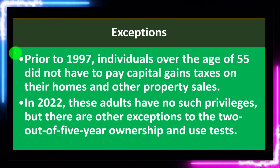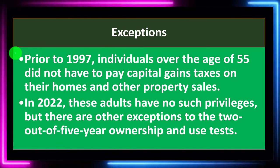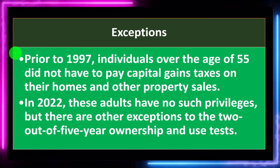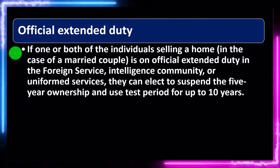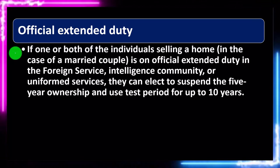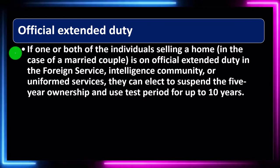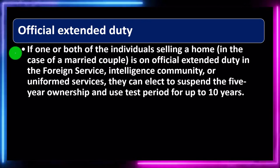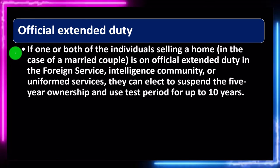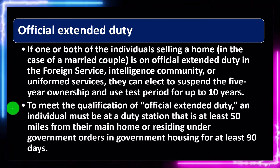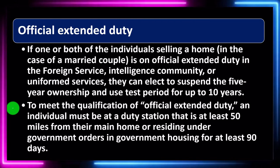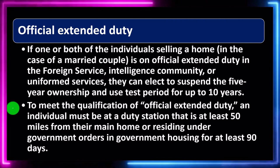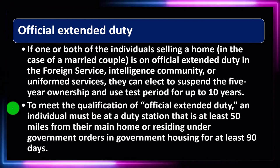Exceptions: prior to 1997, individuals over the age of 55 did not have to pay capital gains tax on their home and other property sales. In 2022, these adults have no such privileges, but there are other exceptions to the two out of five-year ownership and use tests. Official extended duty: if the individual selling a home — or in the case of a married couple — is on official extended duty in the foreign service, intelligence community, or uniform services, they can elect to suspend the five-year ownership and use test period for up to 10 years. To meet the qualification of official extended duty, an individual must be at a duty station at least 50 miles from their main home, or residing under government orders in government housing for at least 90 days.